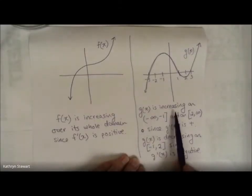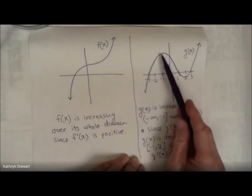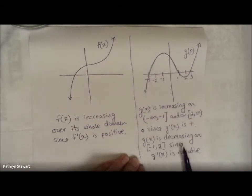So a function is increasing when its derivative or slope is positive. A function is decreasing when its slope or derivative is negative.